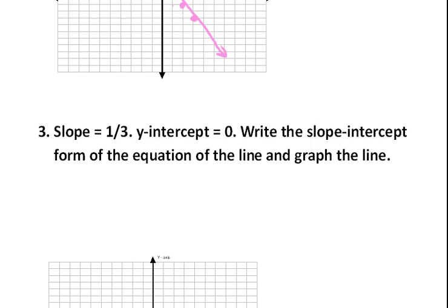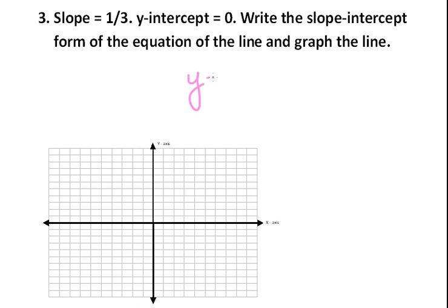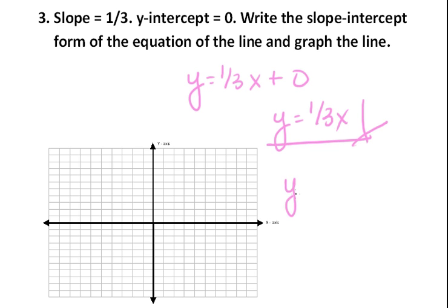Same type of format for another problem. Plugging into slope-intercept form: y equals one-third x plus zero, so the equation is just y equals one-third x. The y-intercept is at (0, 0). Plot that point, then use the slope — go up one over three repeatedly to find more points and draw the line.